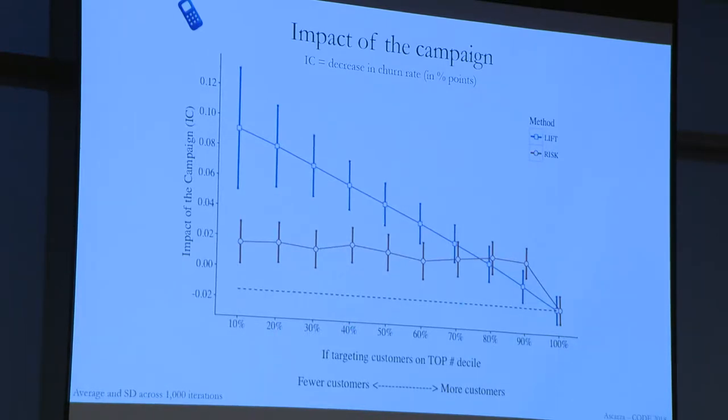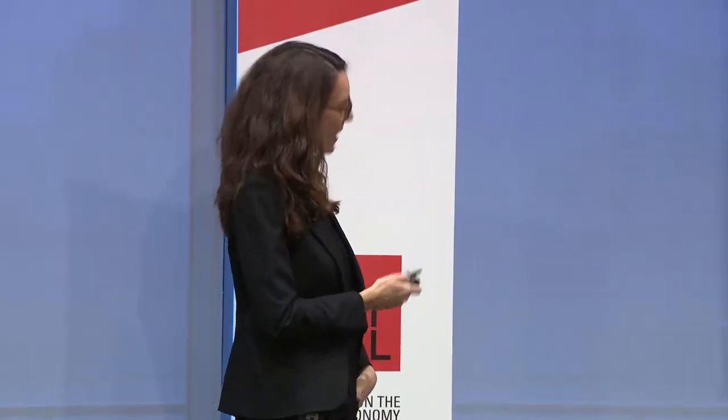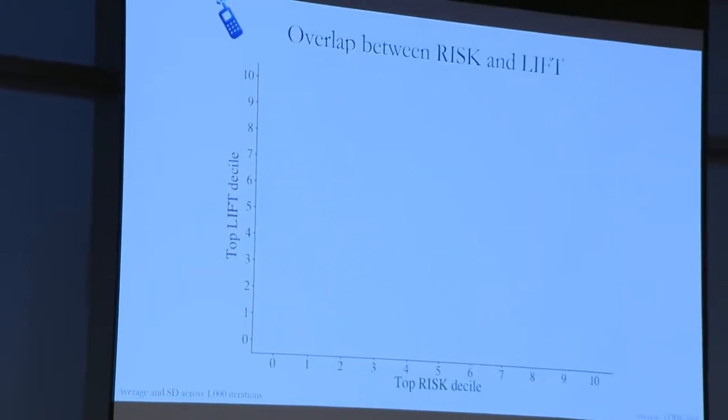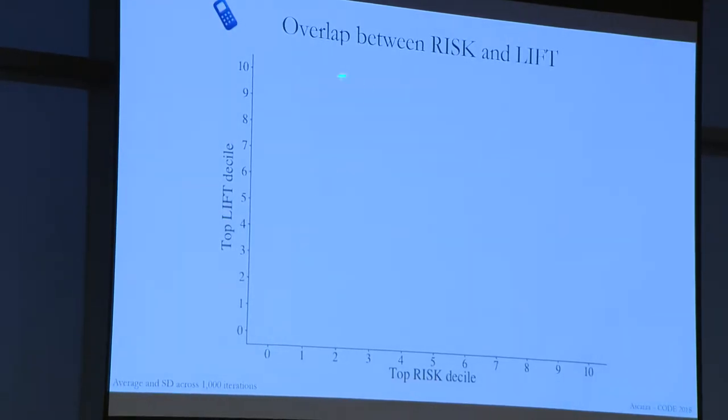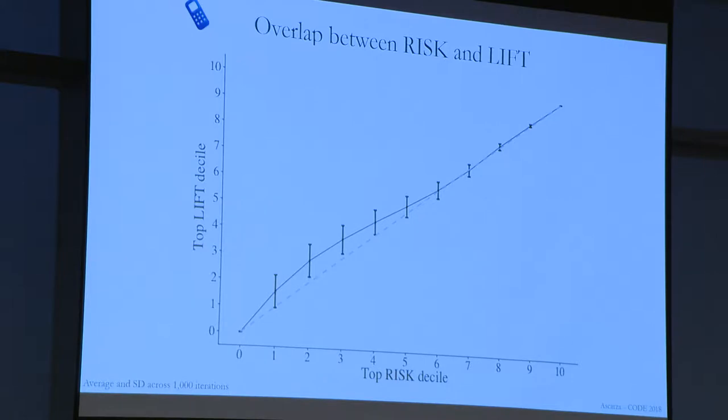It was more a quantification with managerial relevance. The question is, why is this really that different? The easy answer is that these customers are not the same. One way to quantify that is: can I give any sense of correlation between inherent risk and underlying treatment effect? I cannot give a correlation per se because I'm not making assumptions about how these things are distributed. But I can look at the overlap of customers — if I take the top risk decile, what percentage of top-lift people are in that decile?